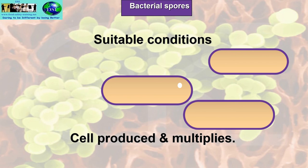Bacterial spores are, for all intents and purposes, harmless. We ingest spores on a daily basis from the atmosphere — they go through our digestive system. Our stomach is very acidic, so it stops the spores from germinating. But if they do germinate and start to grow, that's when we get the problem. Spores per se do not cause food poisoning, but the bacterial cells that germinate from them do. It's a cyclical process: bacterial cells turn into spores, spores turn back into cells.